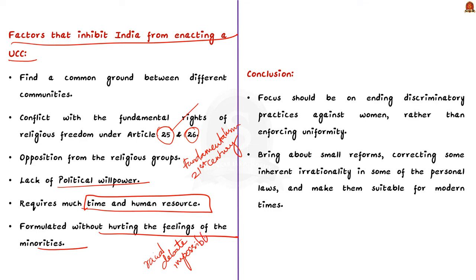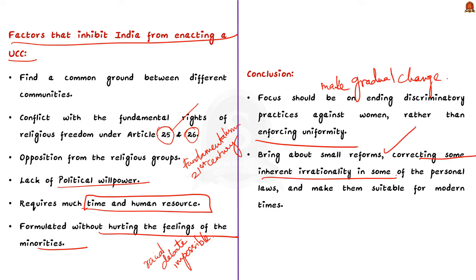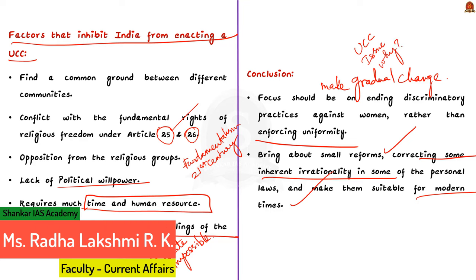For the conclusion, you can write that the UCC in its true spirit must be brought about by making gradual changes. As recommended by the Law Commission, the focus should be on ending discriminatory practices against women rather than enforcing uniformity. Until that is done, the better course would be to bring about small reforms correcting inherent irrationality in some personal laws and making them suitable for modern times, laying the foundation for implementing a nationwide UCC at a later date. This discussion covered what UCC is, why it is important, and what the challenges are in implementing it.